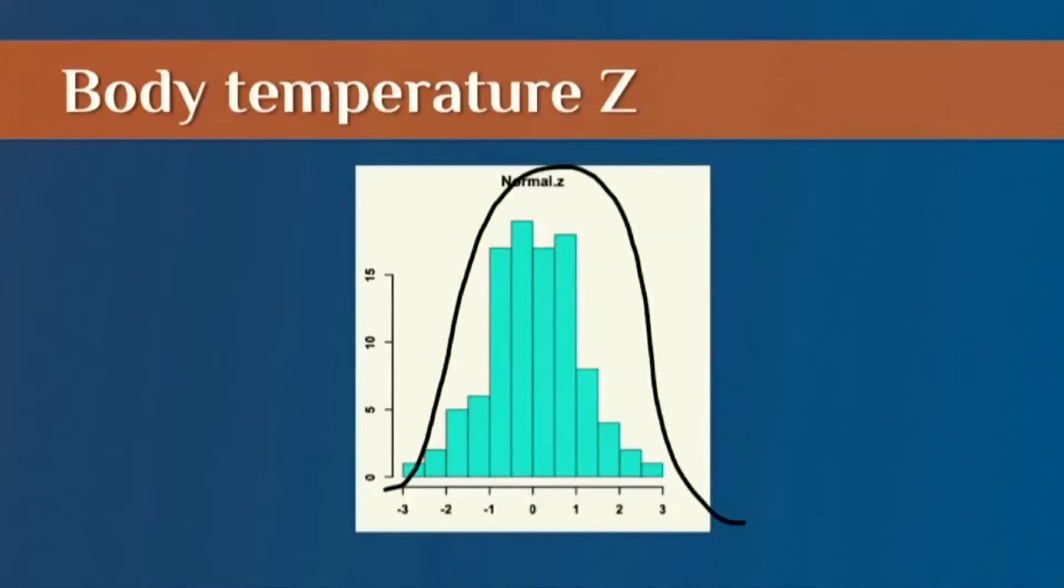If I have a normal distribution and I've converted it to Z, so the mean is 0, then below that score is going to be 50% of the distribution.